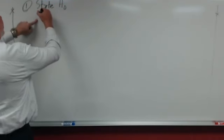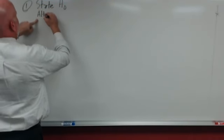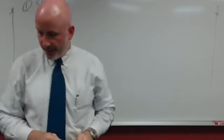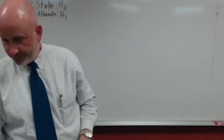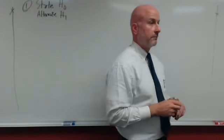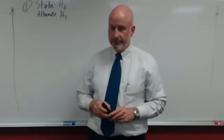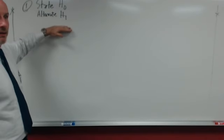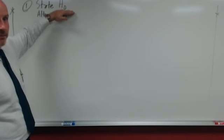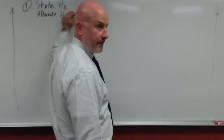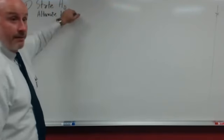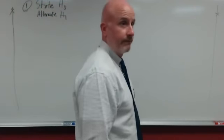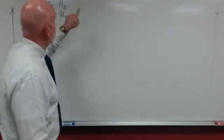Next in step one, we're going to state the alternate hypothesis. It's the statement that we are going to accept if there's enough evidence to prove that the null hypothesis is false. If the null hypothesis is false, the alternate hypothesis will be true.